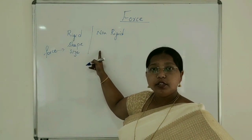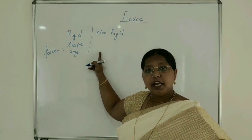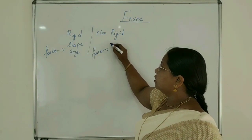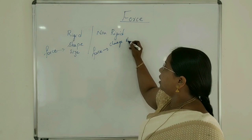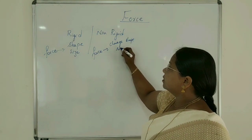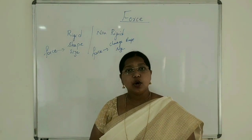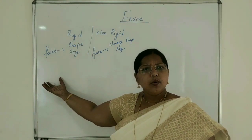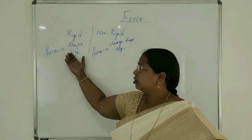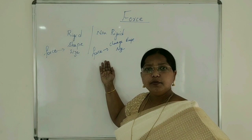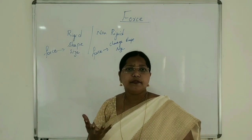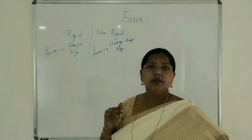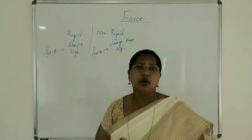Coming to the non-rigid body: a body which can change its shape and size by the action of force is called a non-rigid body. For example, a rigid body could be a stone — by applying a number of forces, we cannot change its shape or size. For a non-rigid body, take the example of a sponge — by the action of force, we can change its shape and size.